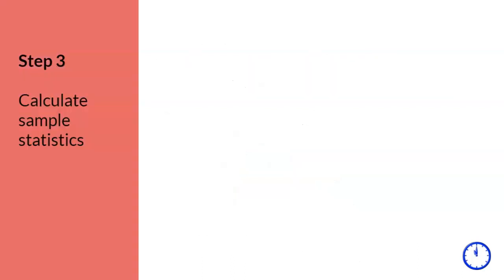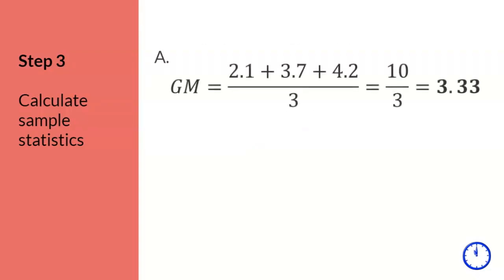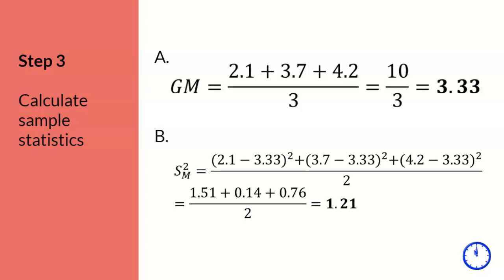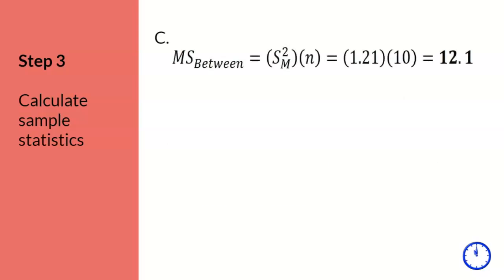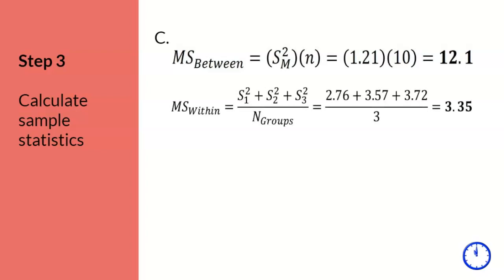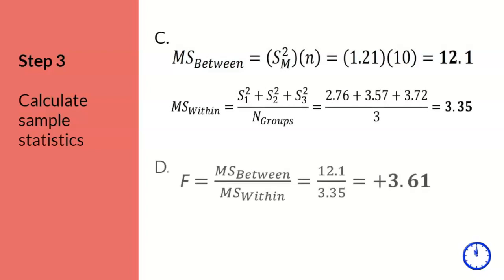Step 3: This step is where we calculate the one-way ANOVA. First, we calculate the grand mean, or the mean of all means, which is 3.33. Second, we calculate the estimated population variance. I recommend slowing down here when doing the calculations for this formula in particular, because students often make a mistake in this step. Third, we calculate the variance between groups, which is 12.1, and the variance within groups, which is 3.35. Finally, we calculate the total variance, or F-ratio, which results in an F of 3.61. The box indicates the final answer.